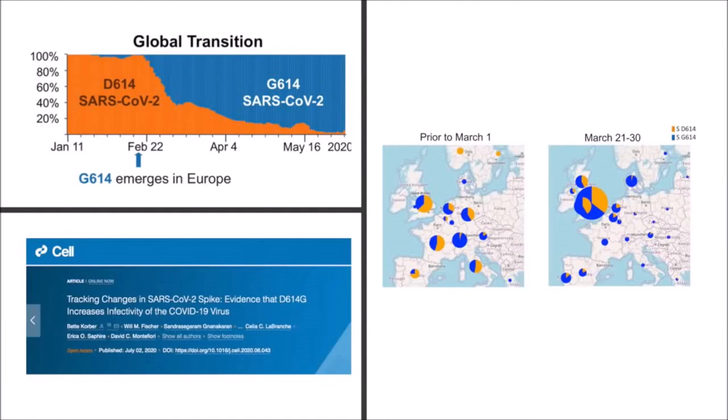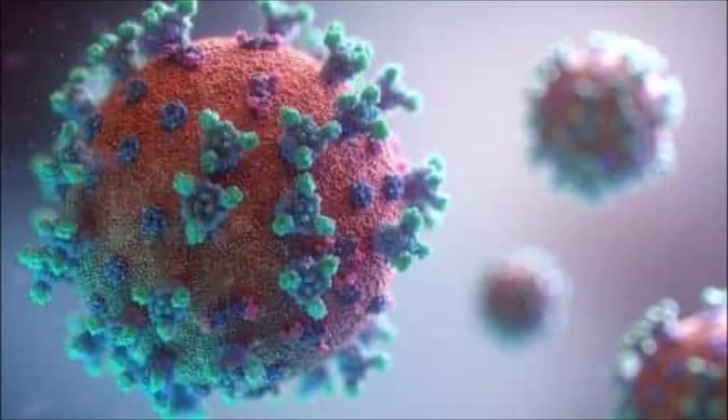To date, the most famous mutation has been the D614G mutation, which was also on the spike protein. It has been blamed for the outbreaks in the US and Europe.